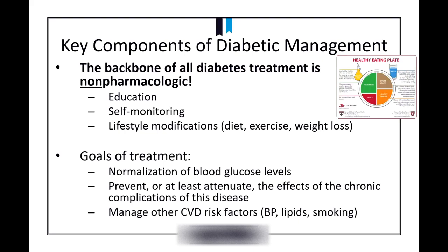Our goals of treatment need to be specified. We want to bring blood sugar levels down to an acceptable range, and more importantly, we really want to try and prevent or attenuate those chronic complications - heart disease, loss of vision, kidney disease - that certainly complicate quality of life. Managing their other CVD risk factors concomitantly is important, as a lot of diabetic patients come in with hypertension and a dyslipidemia profile.